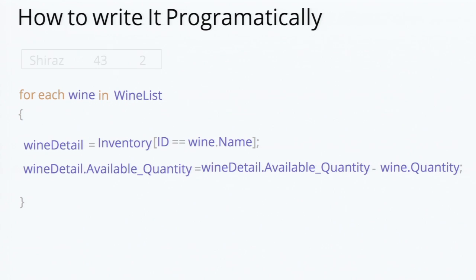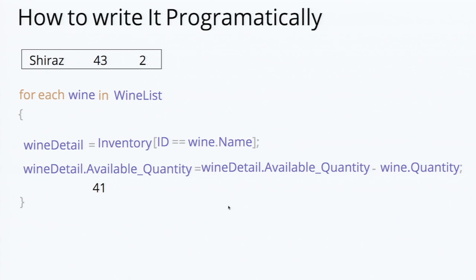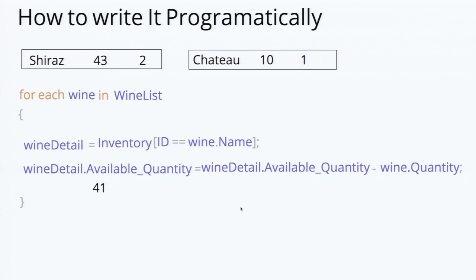The first product is Shiraz, where the available quantity is 43 in the inventory and the user has picked 2. The wine detail variable holds the Shiraz product's wine detail. By subtracting the inventory quantity and the user-given quantity, the quantity will be updated as 41. Just like that, for the second row, the wine variable holds the second row details. The inventory is filtered for the second product with available quantity 10 and user quantity 1, so the updated value will be 9.